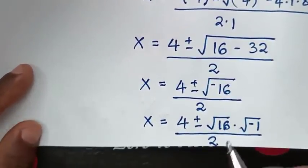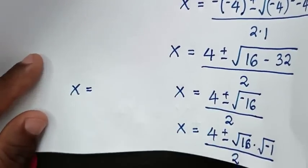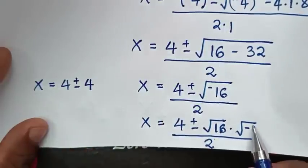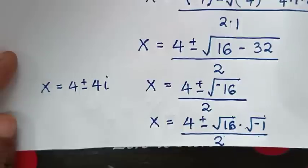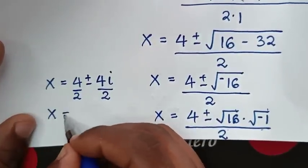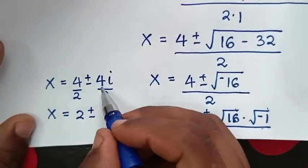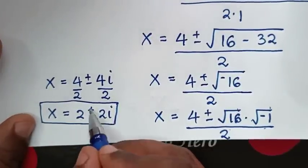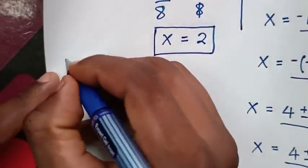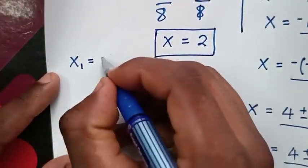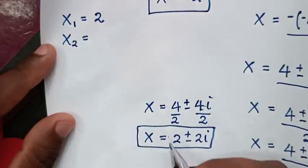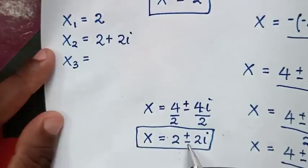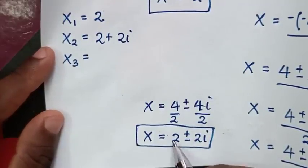Continuing: square root of 16 is 4 and square root of negative 1 is i. So x equals 4 plus or minus 4i, all over 2. Dividing both terms by 2, x equals 2 plus or minus 2i. These are two complex solutions. Therefore the second solution is x equals 2 plus 2i, and the third solution is x equals 2 minus 2i.